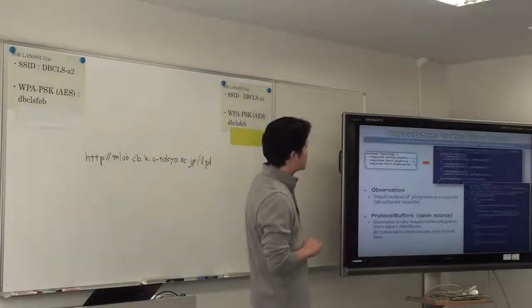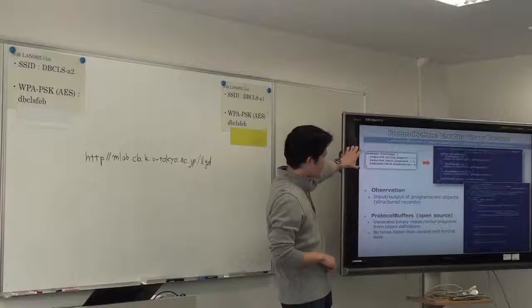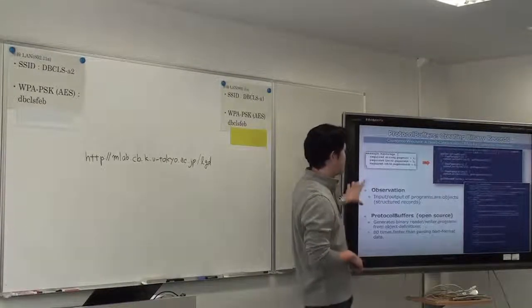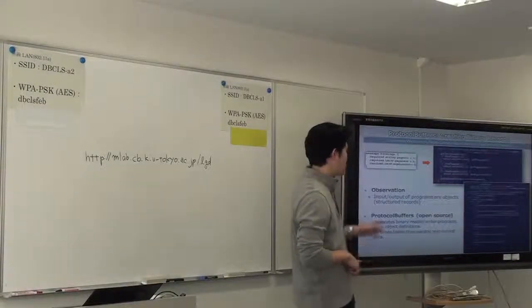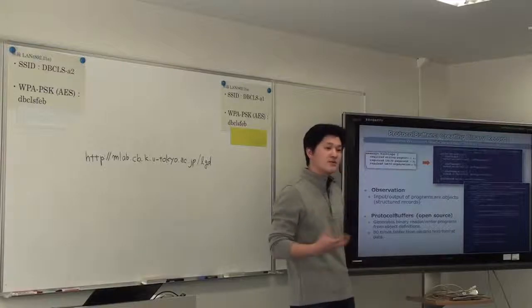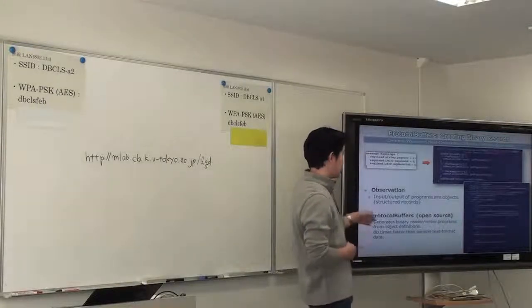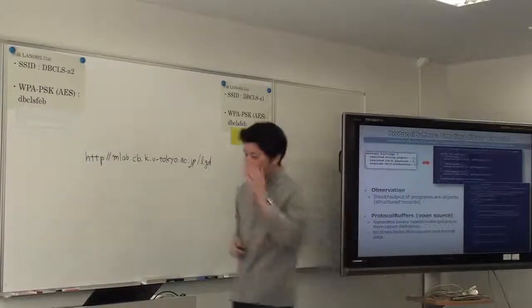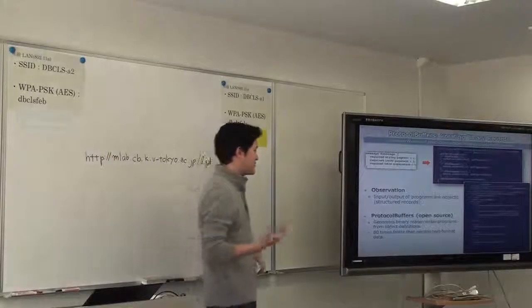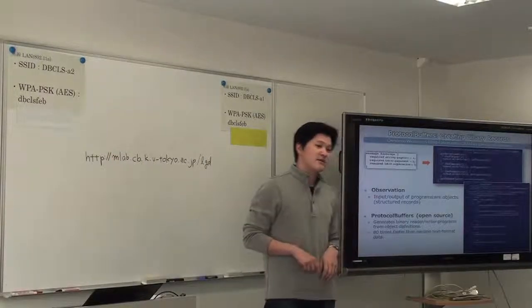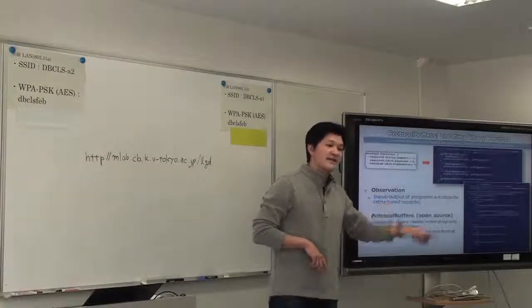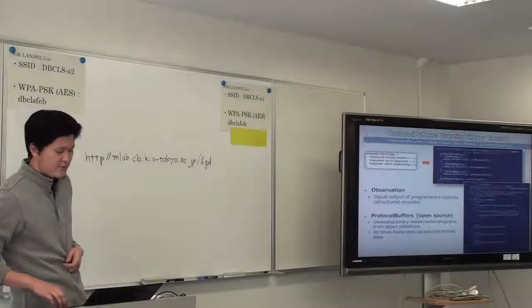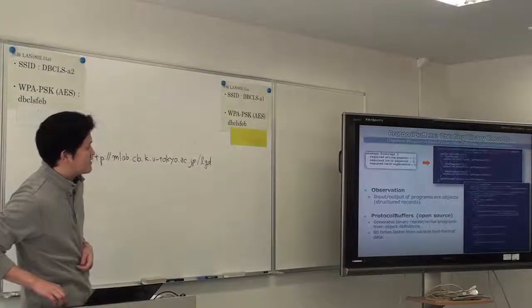So Google, instead of Google's MapReduce, Google has said they use protocol buffers, which produces structured object record definition. The protocol buffer creates a binary reader writer encoder. So it's source code generation script. And by using this reader and writer, it accelerates input and output data processing 80 times faster than simply parsing text data. So this is another key to improve the performance of large data processing.